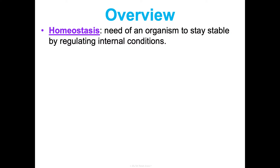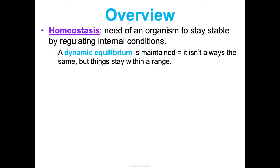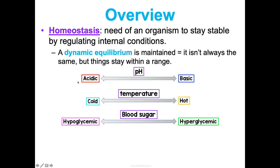Homeostasis is so critical for understanding biology. It is the need of an organism to stay stable by regulating internal conditions and keeping things constant. Things don't always stay the exact same — a dynamic equilibrium has to be maintained, so it isn't static. Things stay within a select range. For instance, your body temperature is not always 98.6 degrees Fahrenheit, and that's okay as long as it stays within a set range. All of these things have to be kept within specific ranges in order to maintain homeostasis.